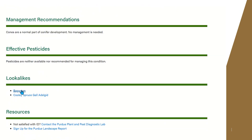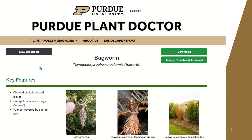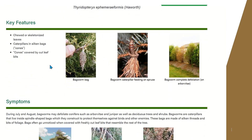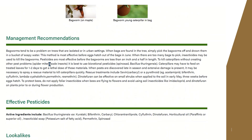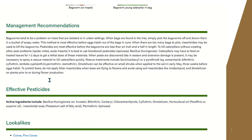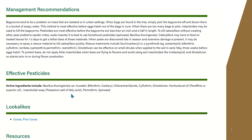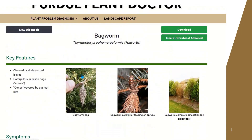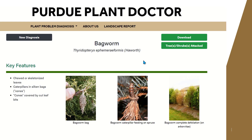Since we're really interested in bagworms, you can go back to the bagworm page and find out details about how to manage this pest, starting with removing the overwintering bags that contain the eggs, following up with using different types of pesticides, as well as a list of pesticides that can be used. You can then download this information and save it on your computer, or you can email it or text it to your clients or landscape contractors to communicate how best to manage this pest.